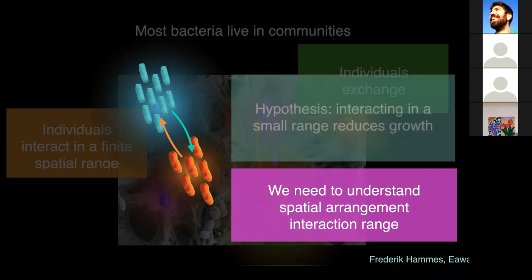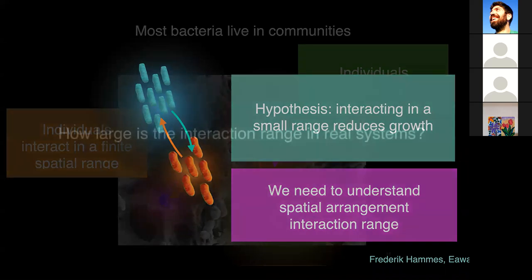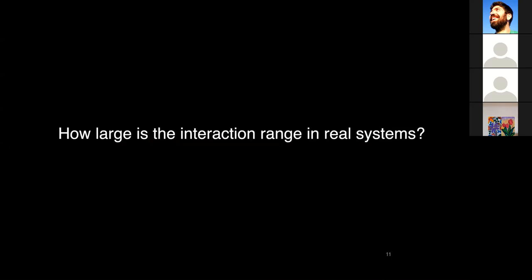We specifically hypothesize that in such a system where two different types need to exchange beneficial compounds, if they wouldn't interact at a very small spatial scale, they might not be able to grow well because they cannot receive — far away from the partner — the compound they need to grow. So we asked, what is the range of interaction in a real system? We studied this question in a simple setup.